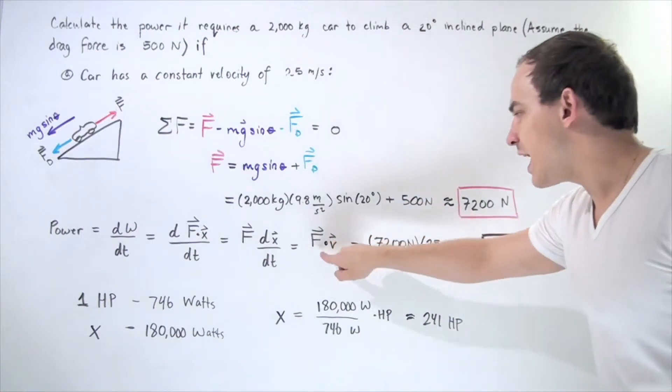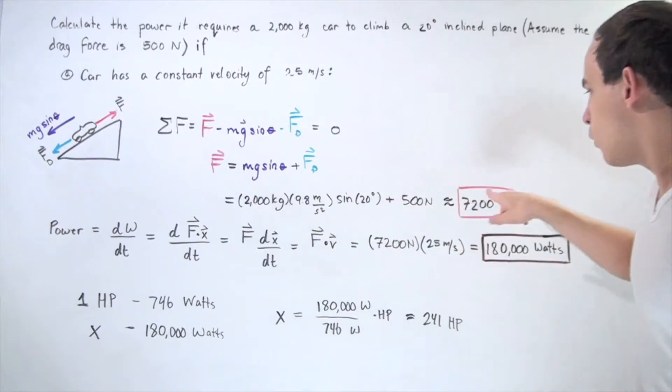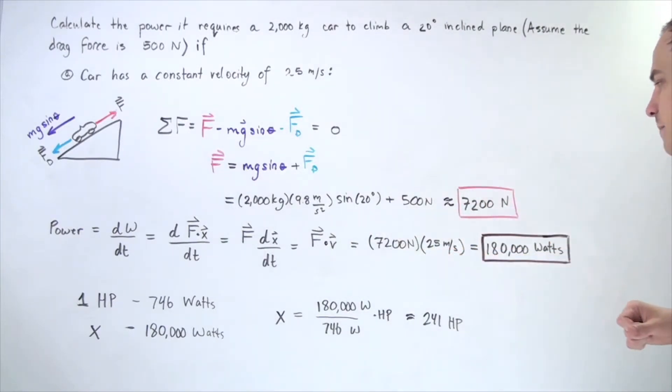That means we simply plug in our values. We know what our velocity is and we know what our force is. We multiply them and we get approximately 180,000 watts of power, joules per second.